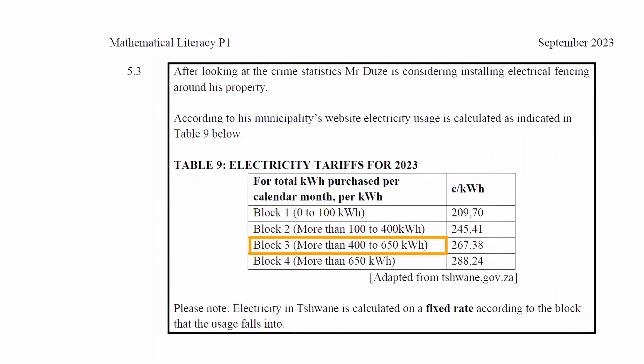The first step is to calculate the cost of 600 kilowatt hours of electricity, then the cost of 900 kilowatt hours of electricity, then we have to find the difference between these two costs. On the table, we see that 600 kilowatt hours of electricity falls into block 3. This means that the rate equals 267.38 cents per kilowatt hour of electricity used.